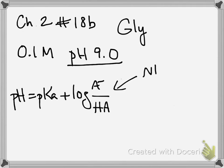So A minus is the NH2 form, and HA is the NH3 plus form. I always like to take a minute and label it to make sure that I'm aware of the two species that we're working with.